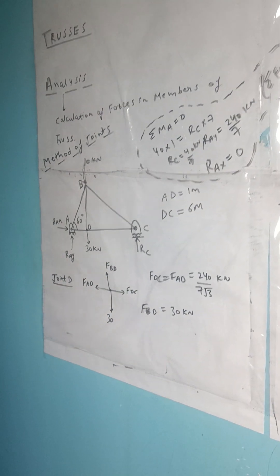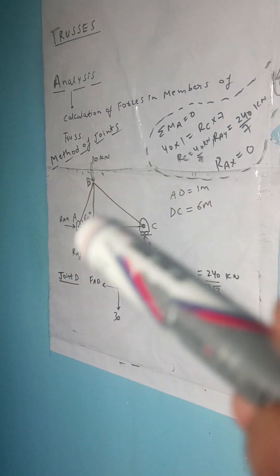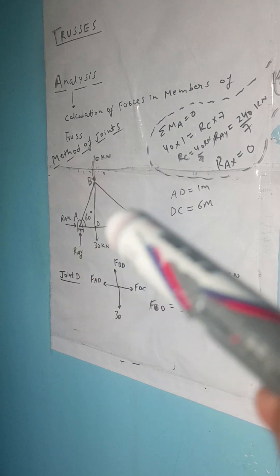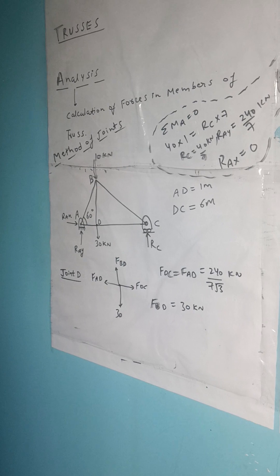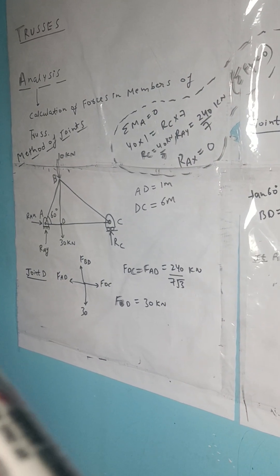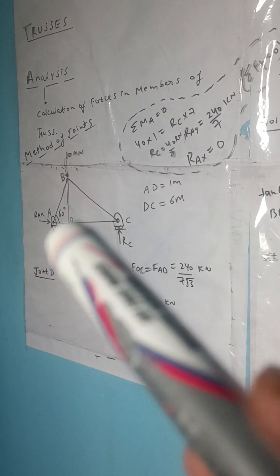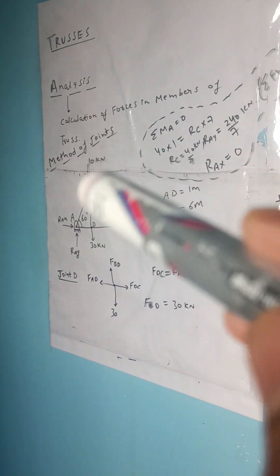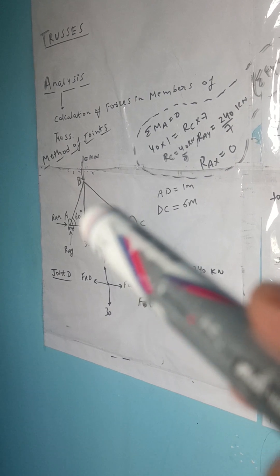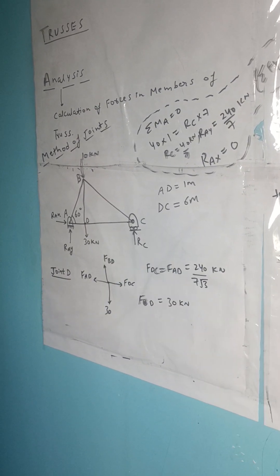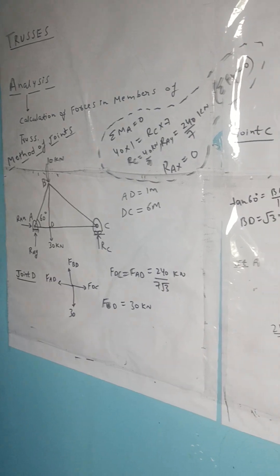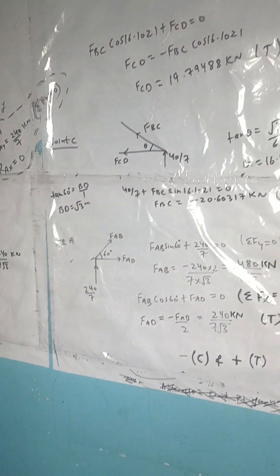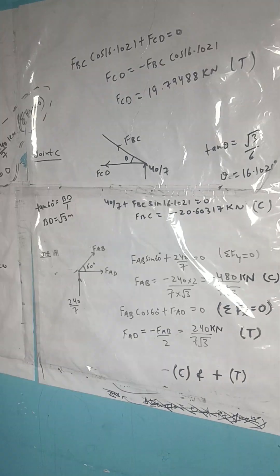For this question, the truss has angle BAD given as 60 degrees. The members are AB, AD, BD, CD, and BC. AD is given as 1 meter and DC is given as 6 meters. At point B, a 10 kilonewton load is acting, and at point D, a 30 kilonewton load is acting.